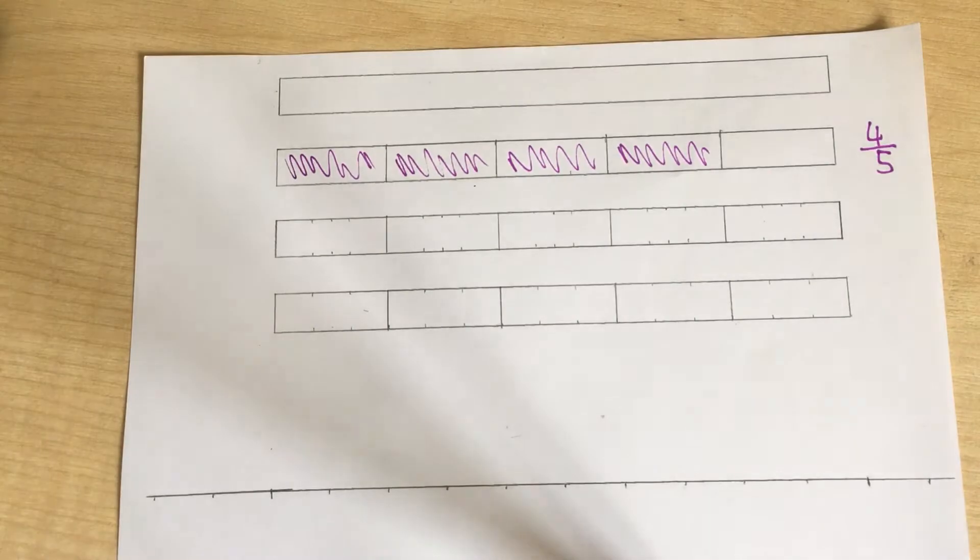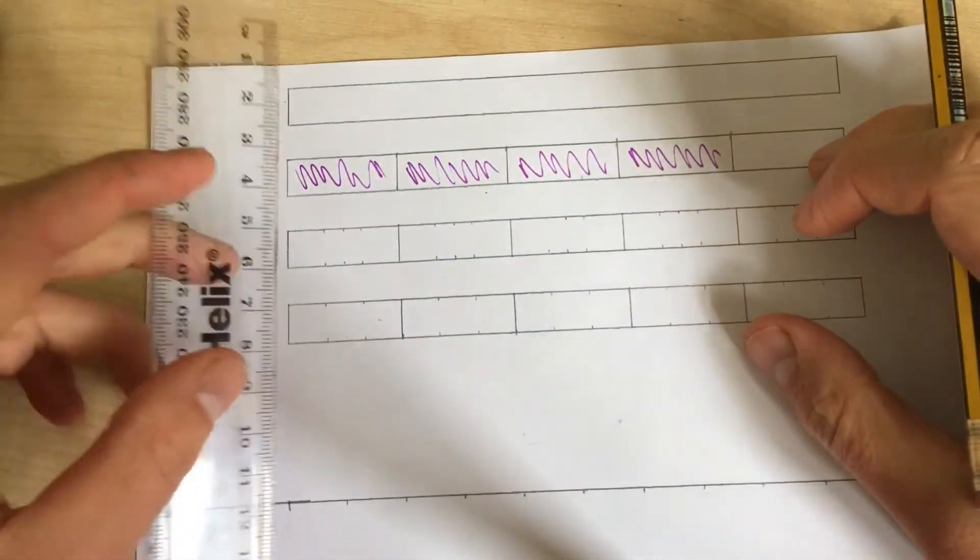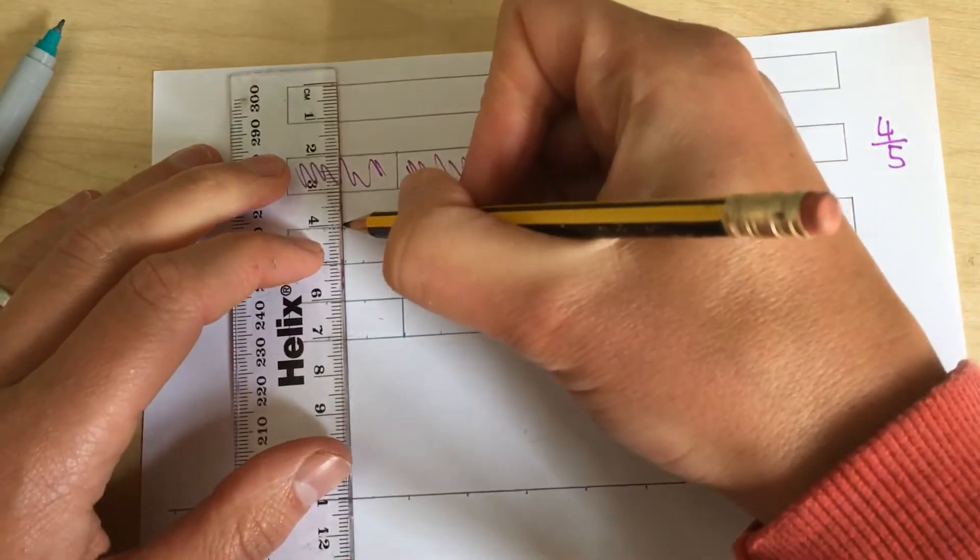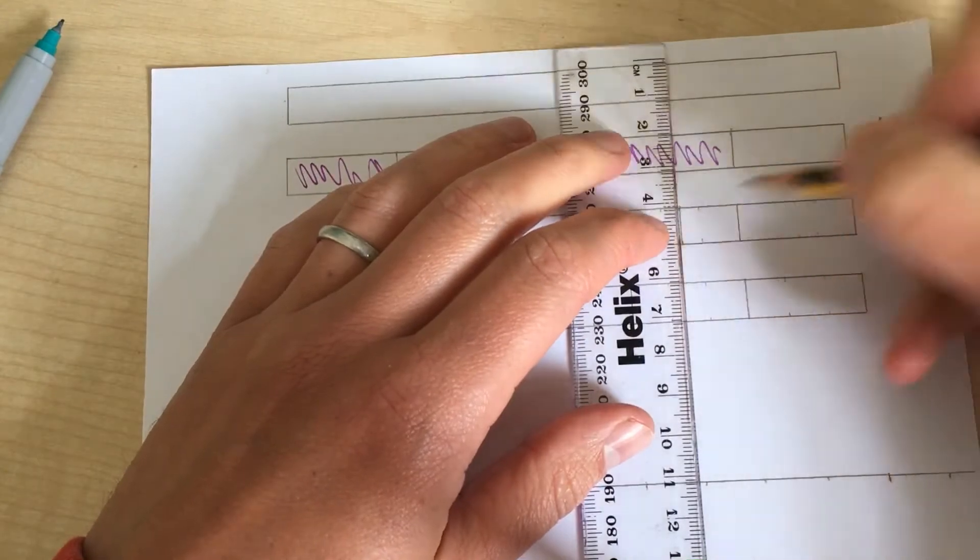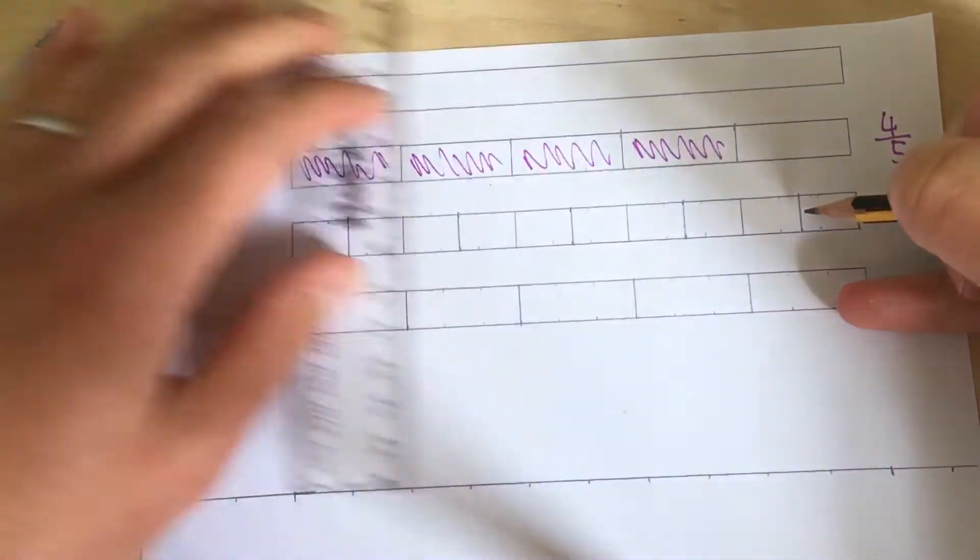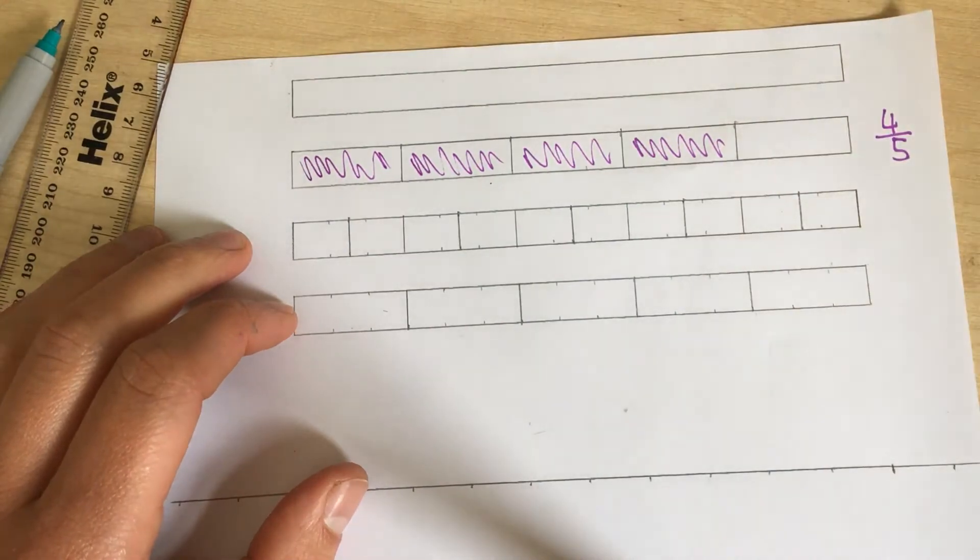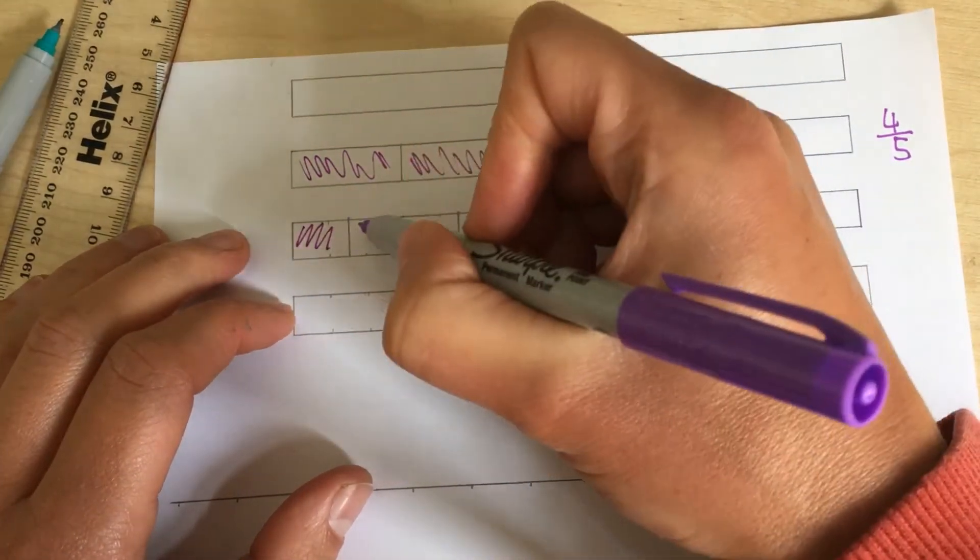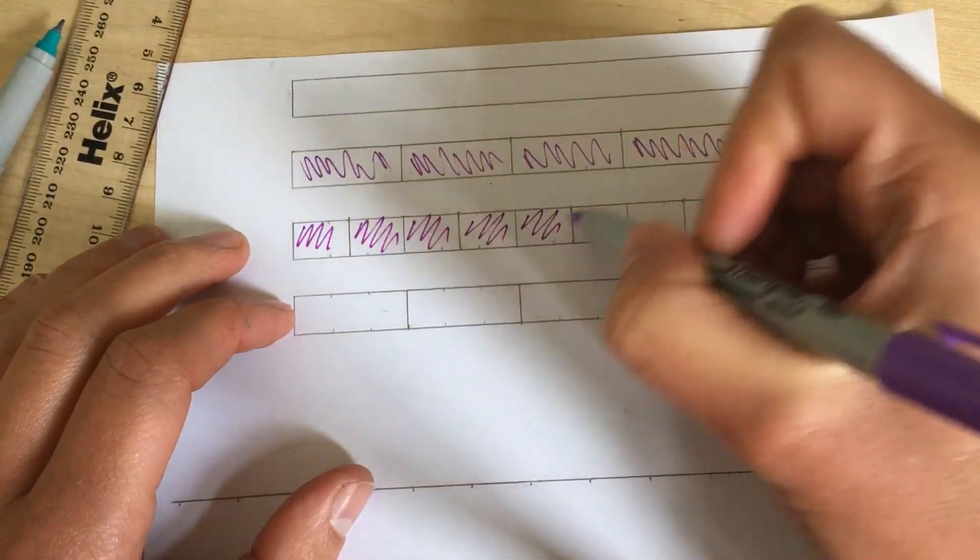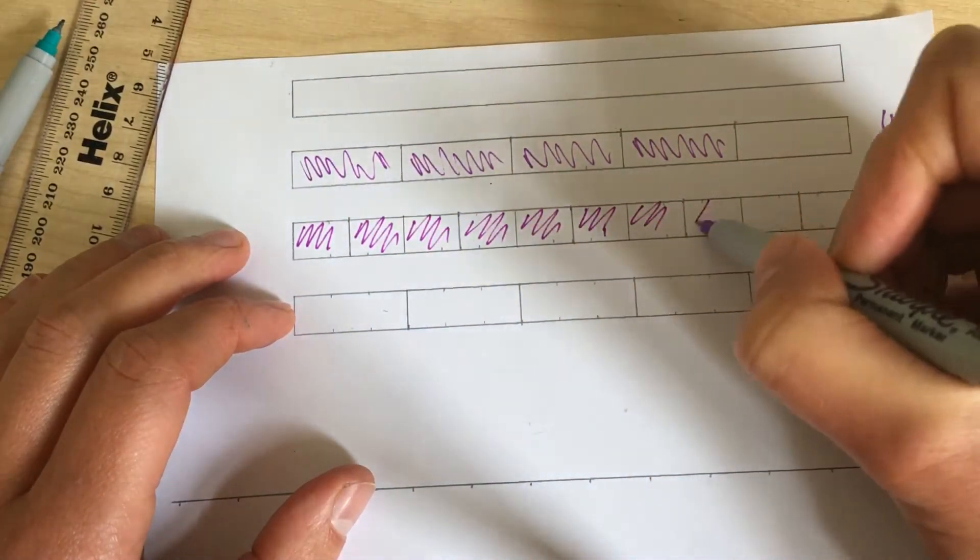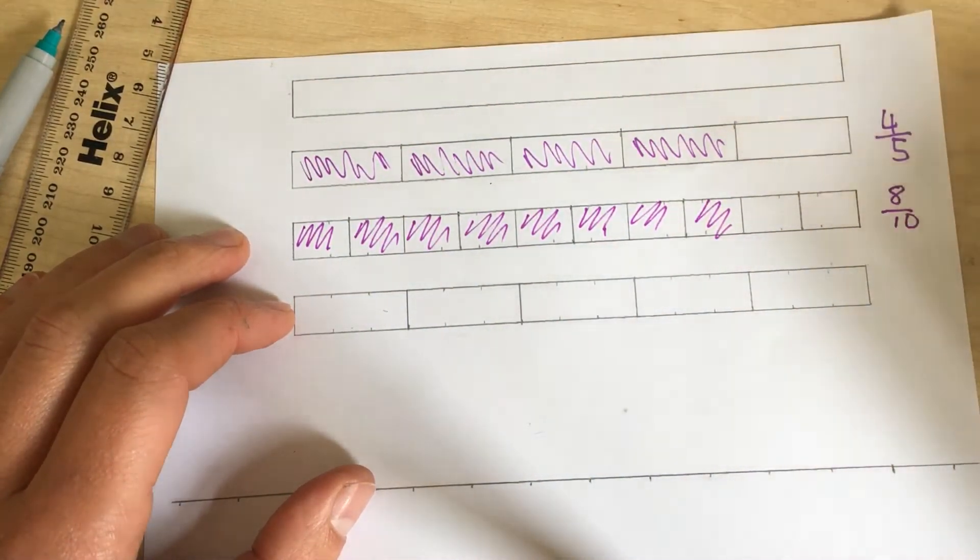Now, let's look at the second one, this one below it, which is also split into five. But what if I split them even more? Just like that. I now have ten equal pieces. Well, what if I shade eight of these? One, two, three, four, five, six, seven, eight. This represents eight tenths.